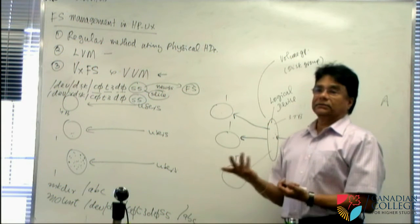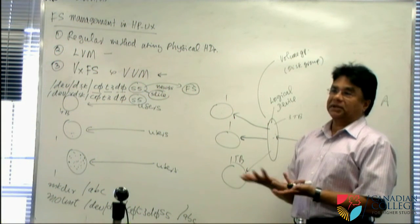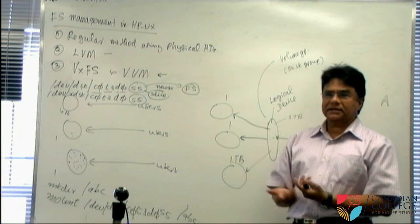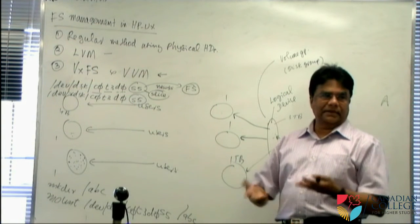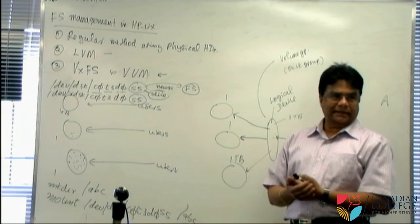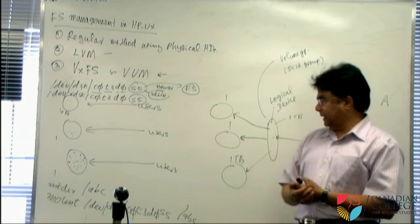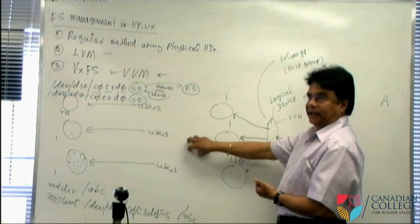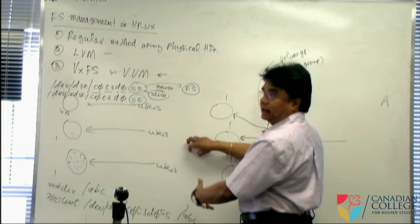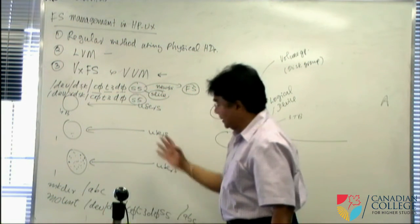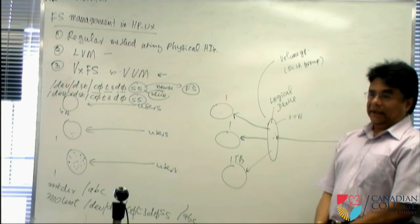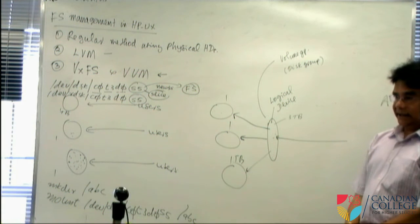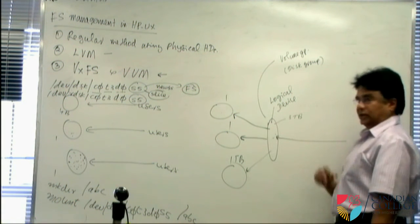One day the file system gets full. A temporary solution is to reduce the reserved space — normally 10% — down to 3% or 2% to free up some space. But for a permanent solution, you must back up all data to tape, find a larger slice or hard drive, format it, restore the data, and remount. This takes time, can corrupt data, and causes downtime for users or customers, costing money.